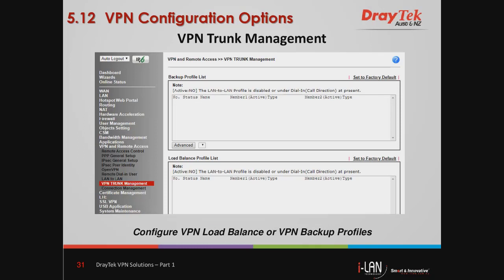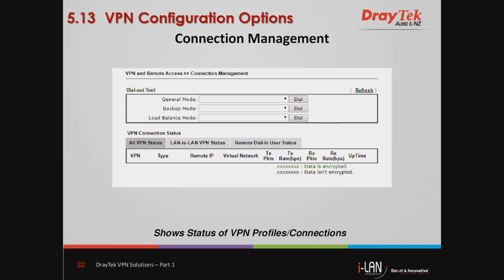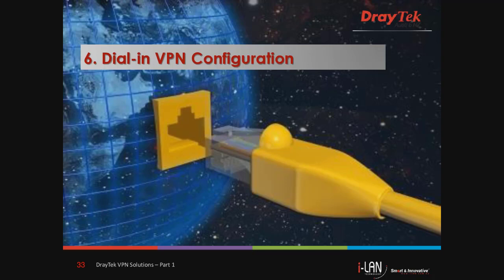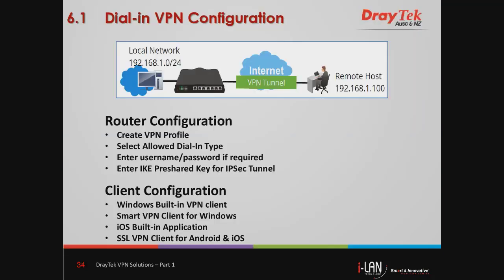Here we have the configuration page to create profiles for LAN-to-LAN VPN tunnels. This is the VPN trunk management menu, where we can set up VPN load balancing or a backup VPN tunnel. The connection management menu shows the status of all VPN connections. We'll now look at dial-in VPN configuration — I will show you the steps to create a dial-in user profile. A dial-in VPN is used where a remote worker needs to connect to the office network to access resources in the head office using their PC, laptop, or smart device.